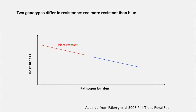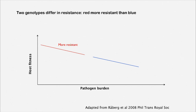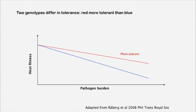Let's take a closer look at what's going on with tolerance and resistance. On the x-axis we have pathogen burden—as you go to the right, there are more and more pathogens in the body. On the y-axis we have host fitness—how likely is it that the host will die? The blue genotype is a less resistant genotype and the red genotype is a more resistant genotype.